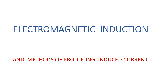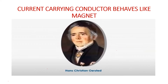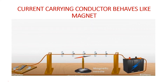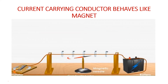In this video, we will know about electromagnetic induction and the methods of inducing electric current in a conductor. A current carrying conductor behaves like a magnet was first observed by Hans Christian Oersted in the year 1820. According to Oersted's observation, when electric current was made to pass through a conductor, it could deflect a compass needle, meaning electric current in the conductor created a magnetic field around it. That means electric current can produce a magnetic field.